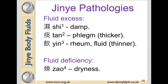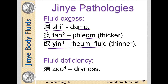Pathological fluids can be in excess or thick, so we can get dampness, or thicker still we can get phlegm. They can be thin and watery, giving us fluid accumulation or Yin, or the fluids can be deficient, giving us dryness.